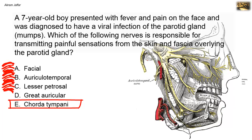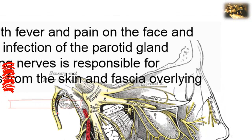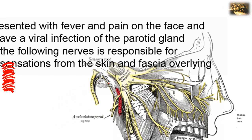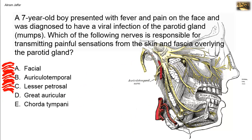The next option is the chorda tympani. This is a branch of the facial nerve. Before the facial nerve leaves the stylomastoid foramen, it gives off the chorda tympani, which passes into the middle ear cavity and then exits through the petrotympanic fissure to the infratemporal fossa, where it joins the lingual nerve. The chorda tympani carries secretomotor fibers for the sublingual and submandibular salivary glands and taste fibers from the anterior two-thirds of the tongue. It has nothing to do with sensations from the parotid gland.